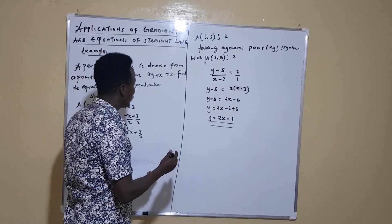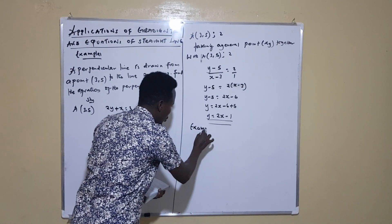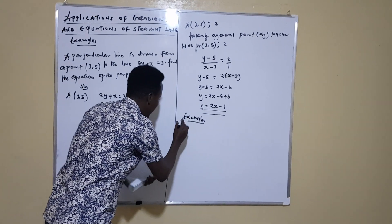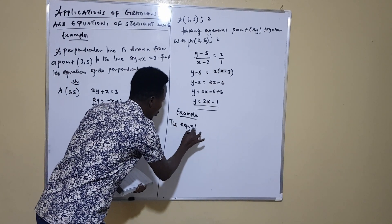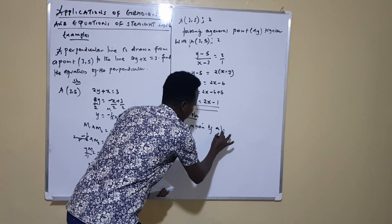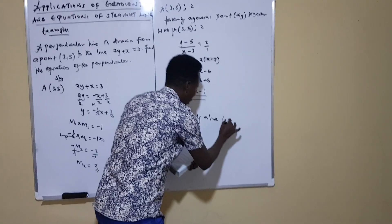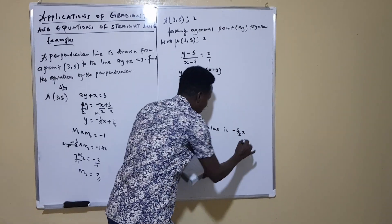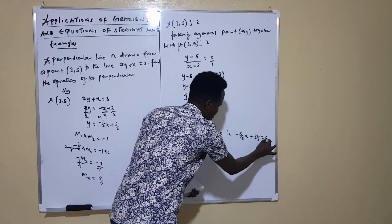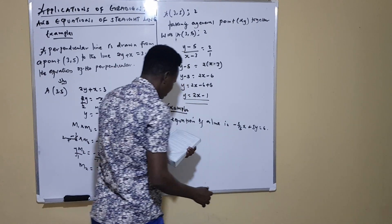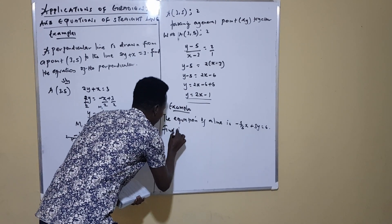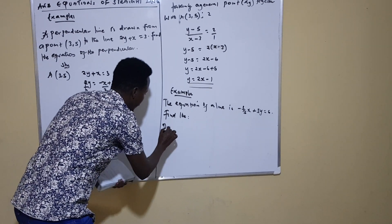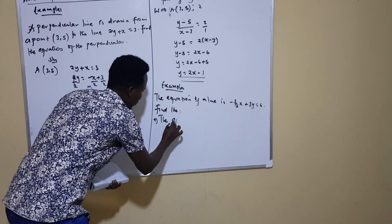Let's also see Example 2. The equation of a line is negative three-fifths x plus 3y equals 6. You are asked: first, find the gradient of the line; and second, find the equation of a line passing through point (1, 2) and perpendicular to the given line.